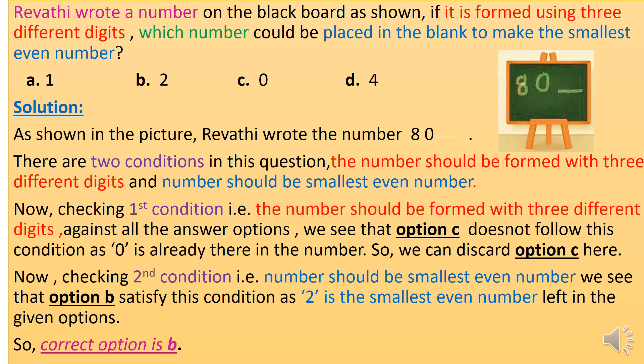Checking the first condition — the number should be formed with 3 different digits. Against all the answer options, we see that option C does not follow the condition as 0 is already there in the number, so we can discard option C. Checking the second condition — the number should be the smallest even number. Option B satisfies this condition as it gives the smallest even number left in the given options. So the correct option is B.